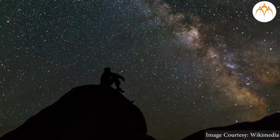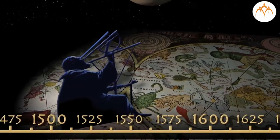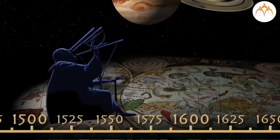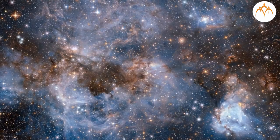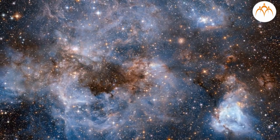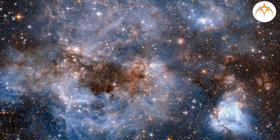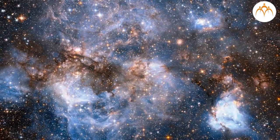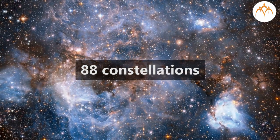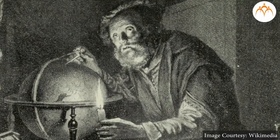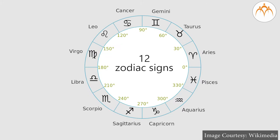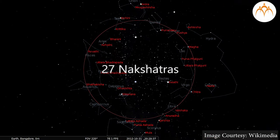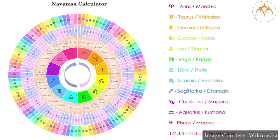When we observe the sky at night we can see thousands of stars. Astronomers have studied the stars for hundreds of years and found different groups of stars forming different shapes, making it easier to locate, identify, and study them. Western astronomers divided the celestial sphere into 88 constellations. Ancient astronomers thought of 12 zodiac signs, and our Indian astronomers put forth the idea of 27 nakshatras.